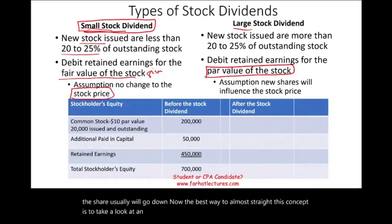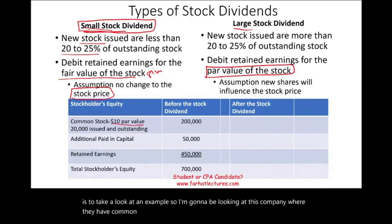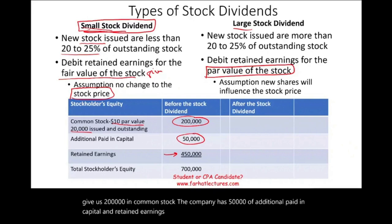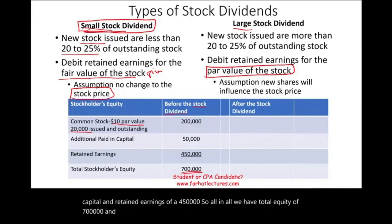Let's look at an example. The company has common stock with a $10 par value, 20,000 shares issued, giving us $200,000 in common stock. The company has $50,000 of additional paid-in capital and retained earnings of $450,000, for total equity of $700,000. This is before we declare any stock dividend.